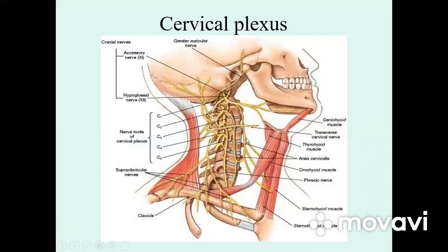The branches arising from the plexus are divided into cutaneous, muscular, and mixed. Cutaneous branches are sensorial, muscular branches are motoral, and mixed branches have both sensorial and motoral fibers.